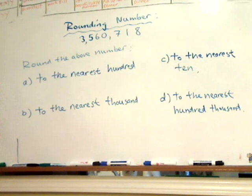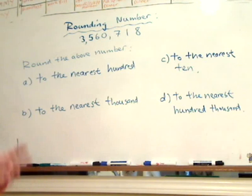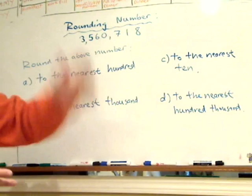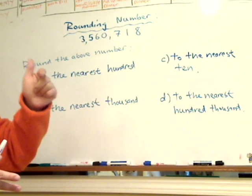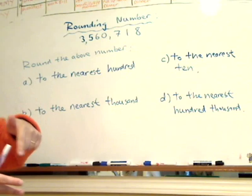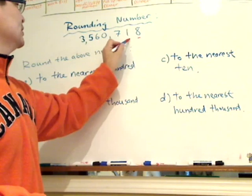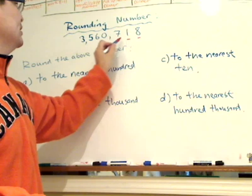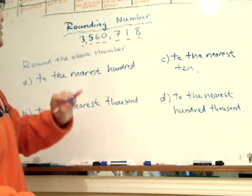Let's look at this first question. First of all, let's review the rule of rounding. In order to round, you always look at the number before that digit. If it's five or greater, you round up. If it's less than five, you round down. In this number, you have the ones, the tens, the hundreds, the thousands, the ten thousands, the hundred thousands, and the millions.